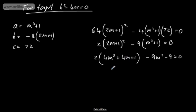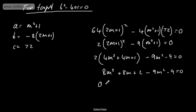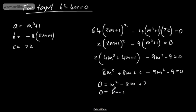Rearranging: minus m squared plus 8m minus 7 equals 0, or m squared minus 8m plus 7 equals 0. Factoring: m minus 1 times m minus 7 equals 0, so m equals 1 or m equals 7.